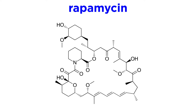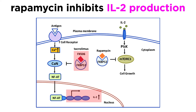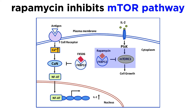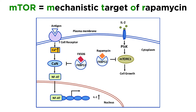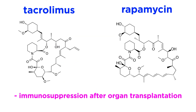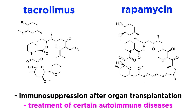Another similar immunophyllin-binding drug worth being aware of is rapamycin. In the context of immunosuppression, it also leads to the inhibition of interleukin-2 production, but it does so via inhibition of the mTOR signaling pathway, not from calcineurin inhibition. In fact, this is how the important mTOR signaling cascade was named — mechanistic target of rapamycin. These compounds are primarily used for immunosuppression after organ transplantation, and in rare cases to treat some autoimmune diseases.